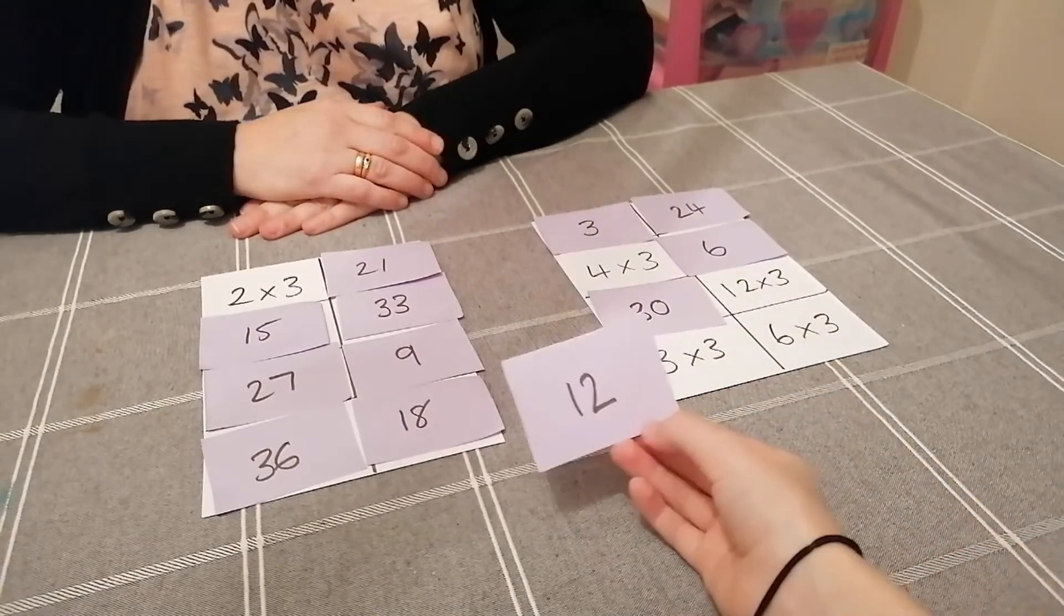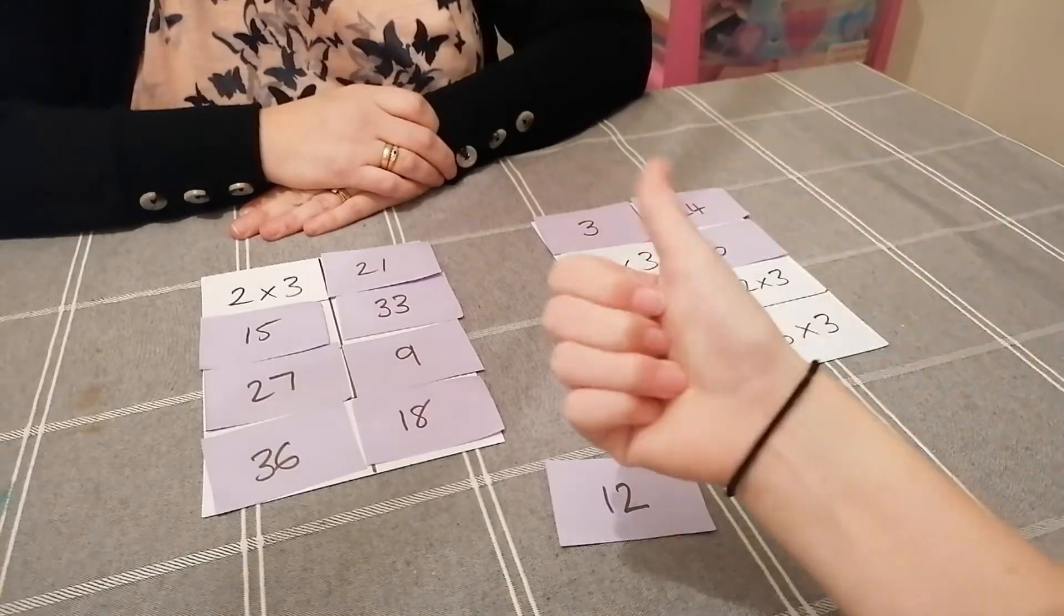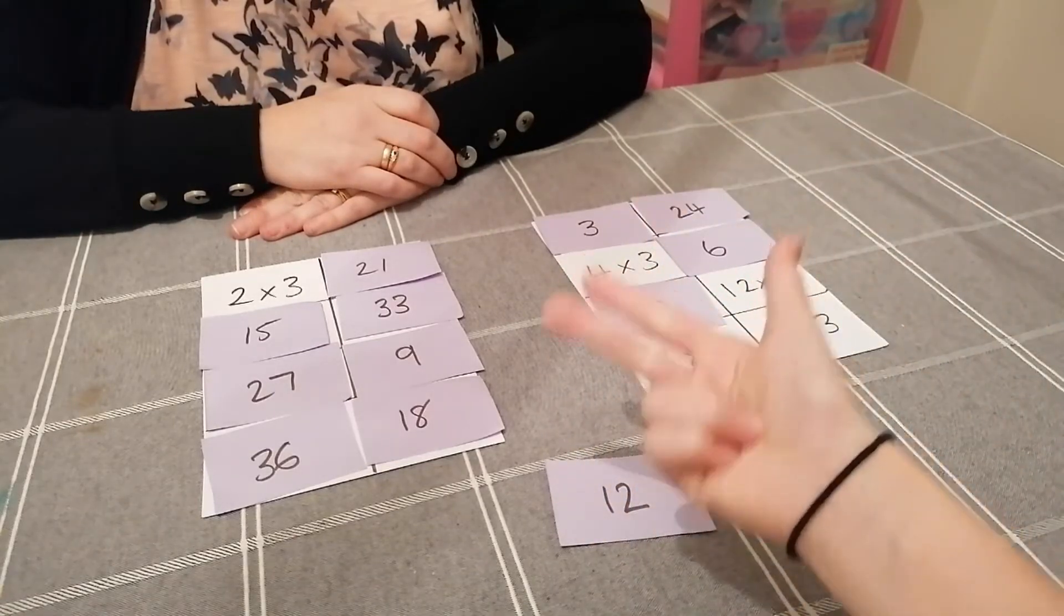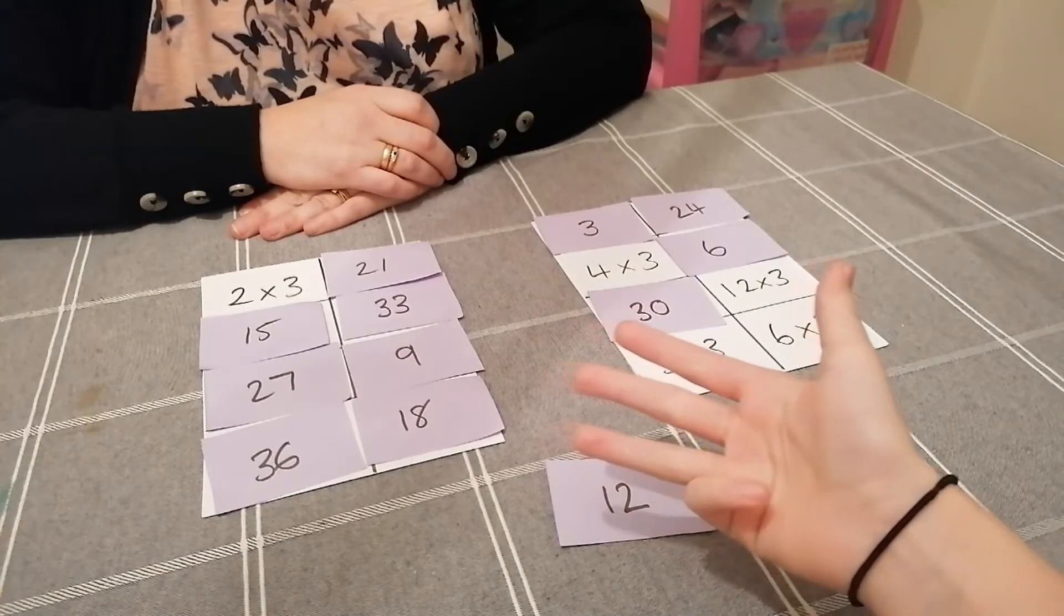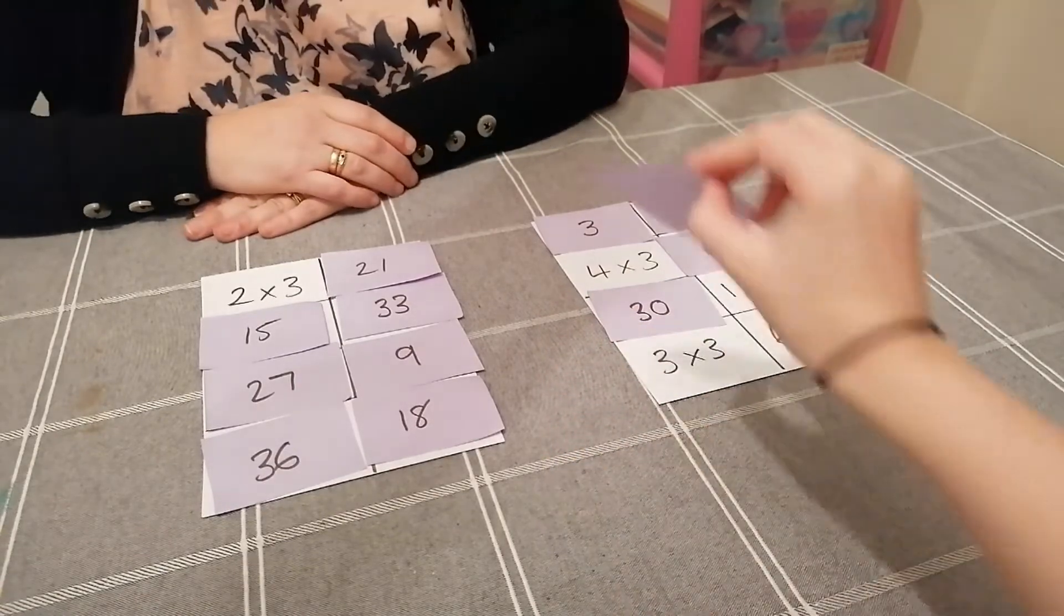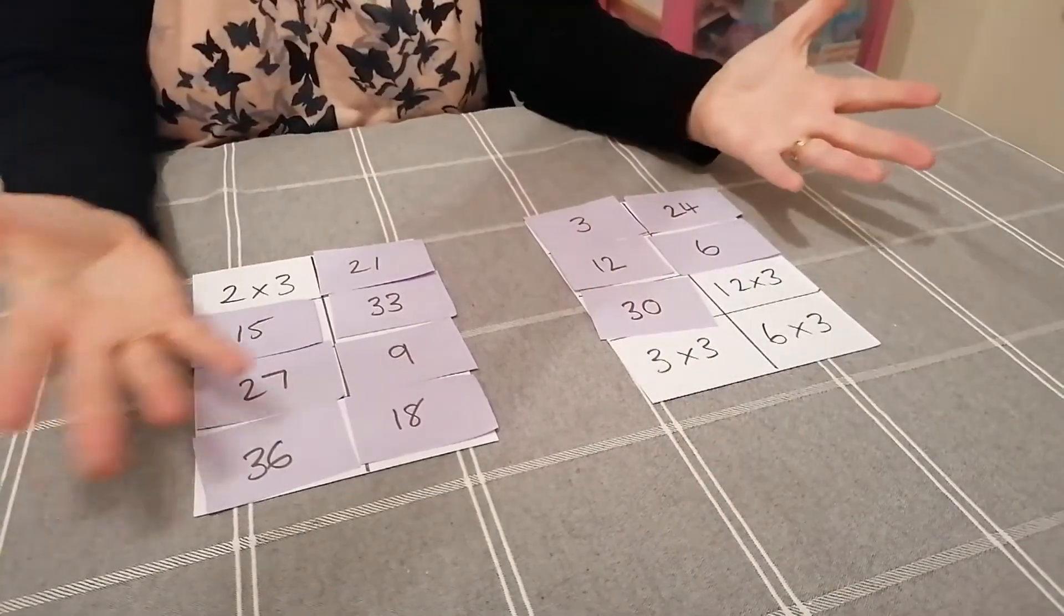Okay, Miss B, your turn. Twelve. Which number fact equals twelve? I'm gonna count. Three, six, nine, twelve. So how many lots of three? Four. Four lots of three, well done. Have you got that on your card? Yeah, excellent.